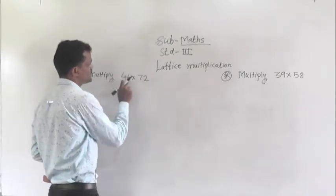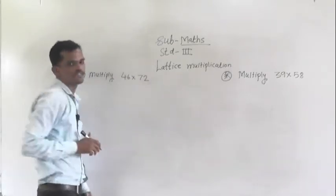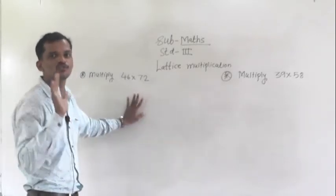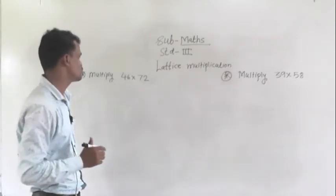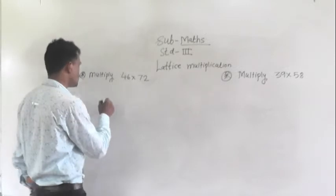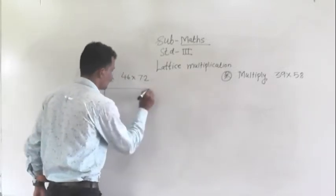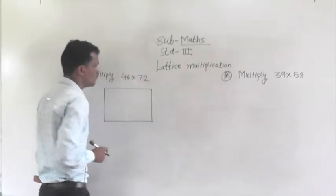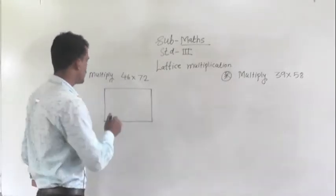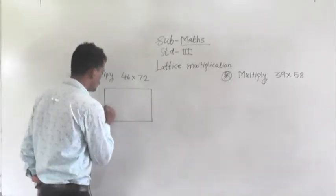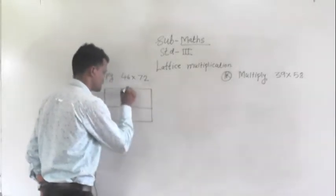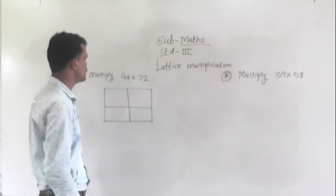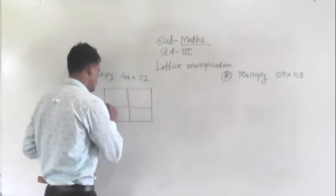We will solve this example: multiplying 46 by 72, using lattice multiplication. First of all, you have to draw one rectangle here. Now divide this rectangle into 4 parts. Next step, make the partitions like this.